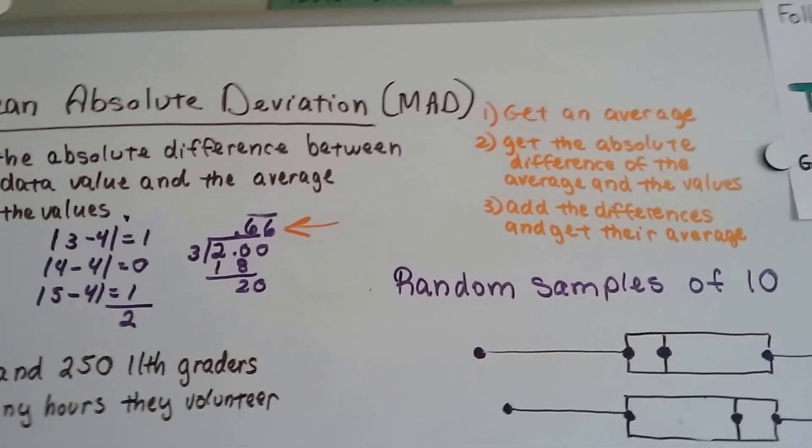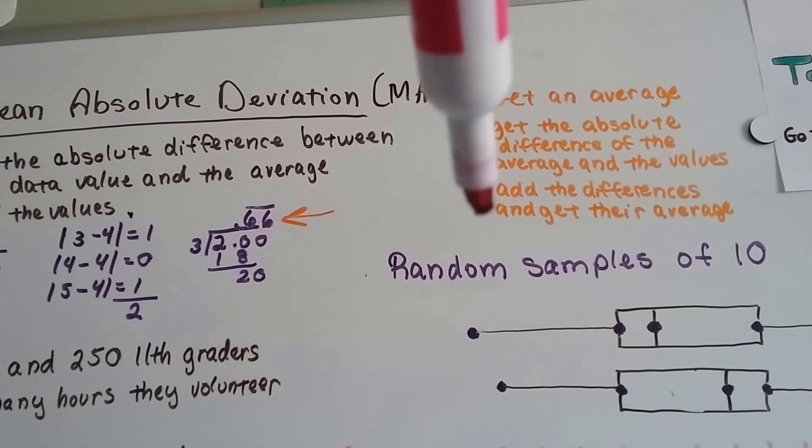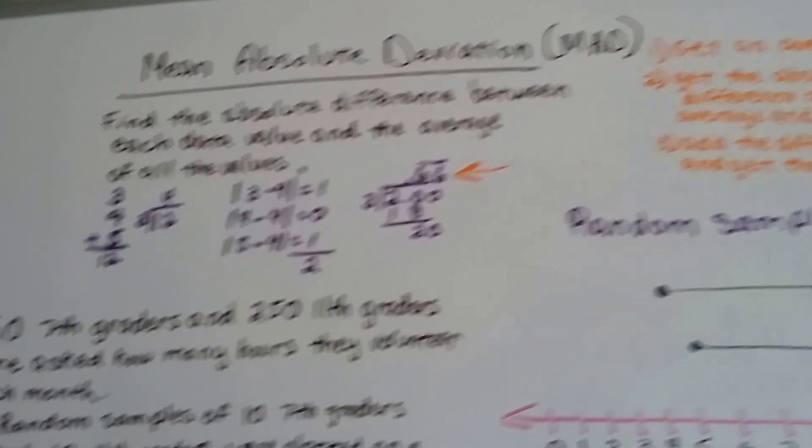We got an average, then we got the absolute difference of the averages and the values, then we added the differences, and then we got their average.